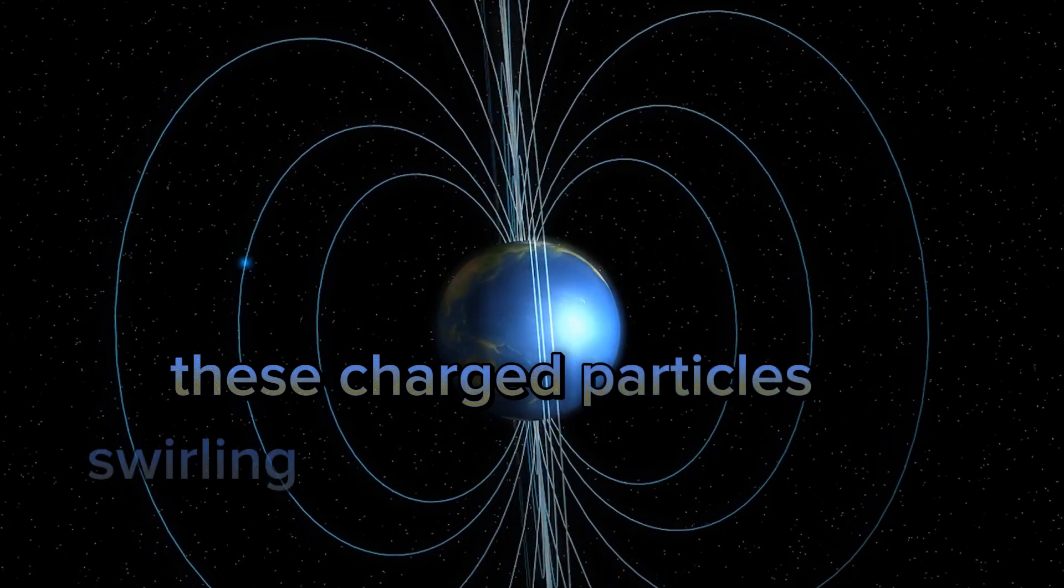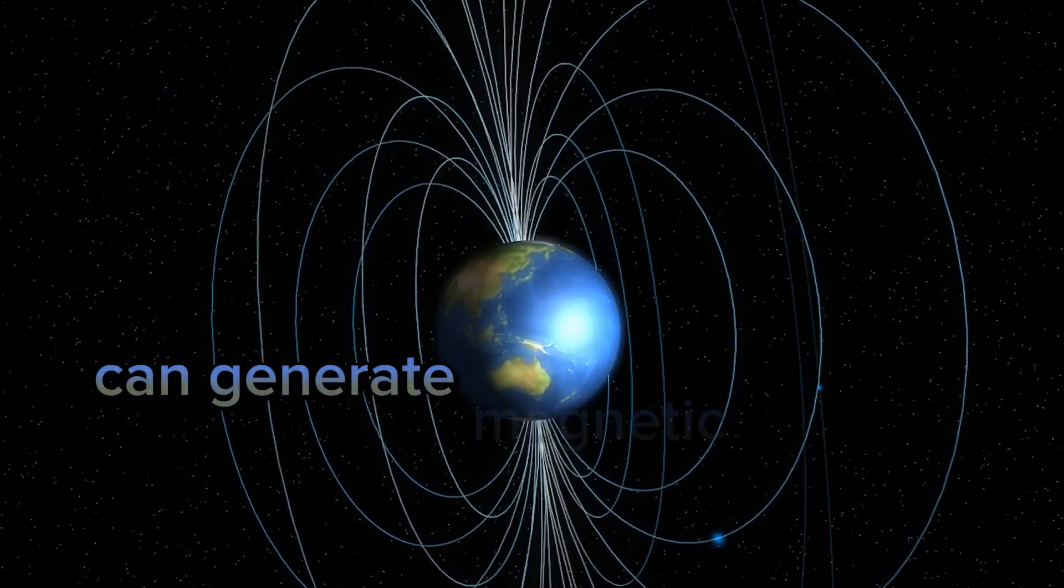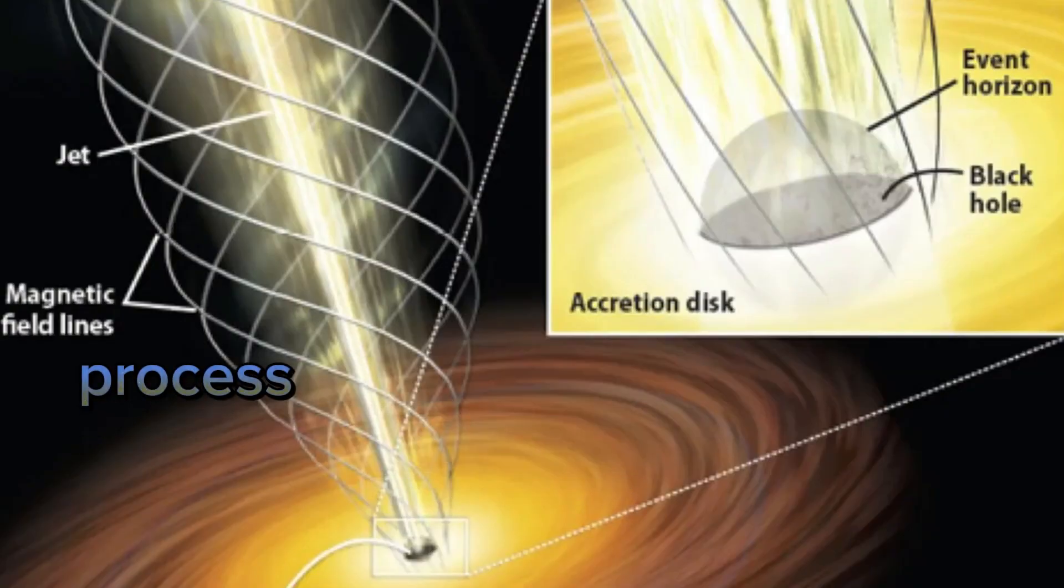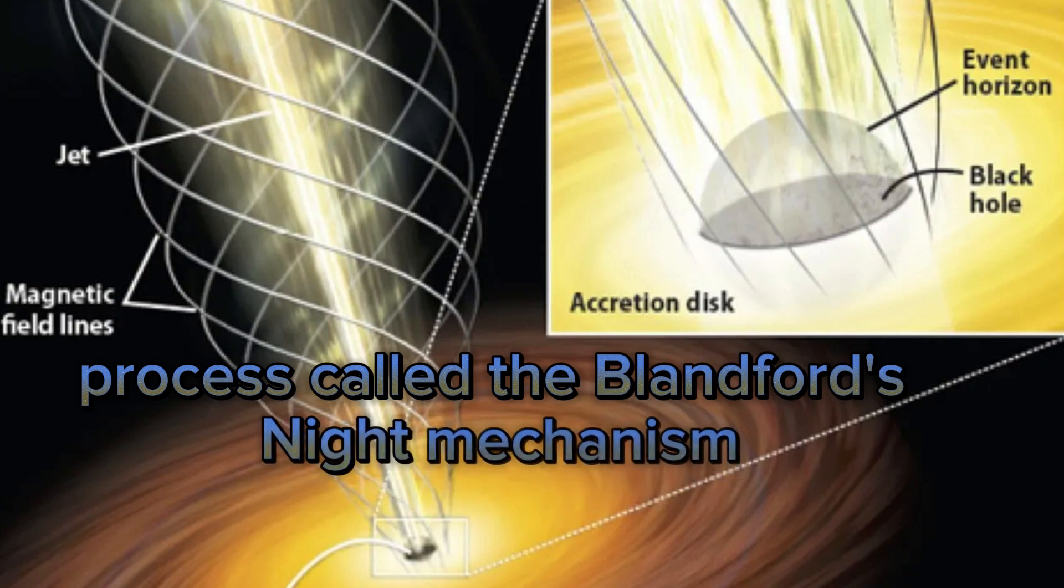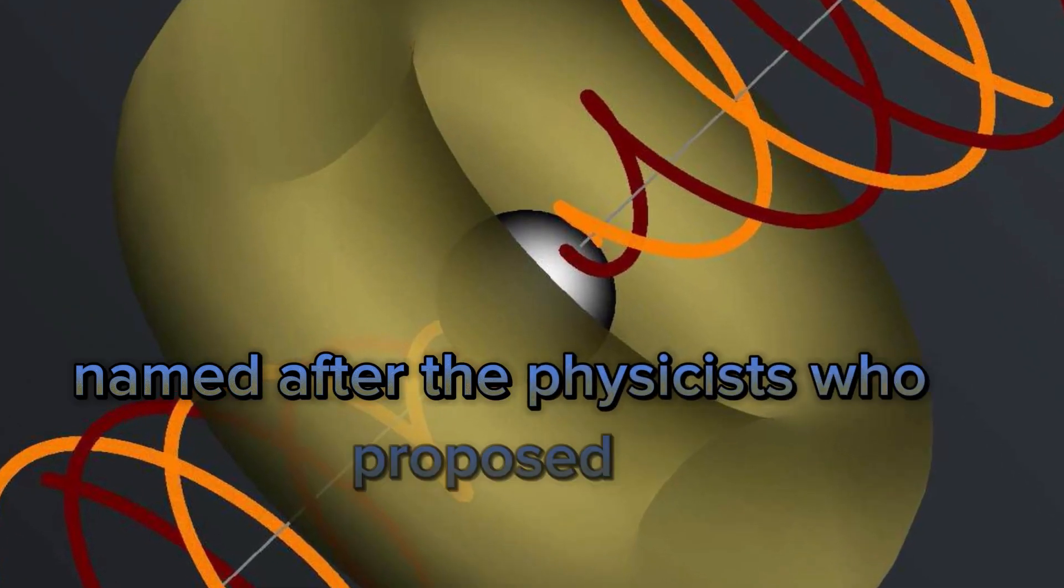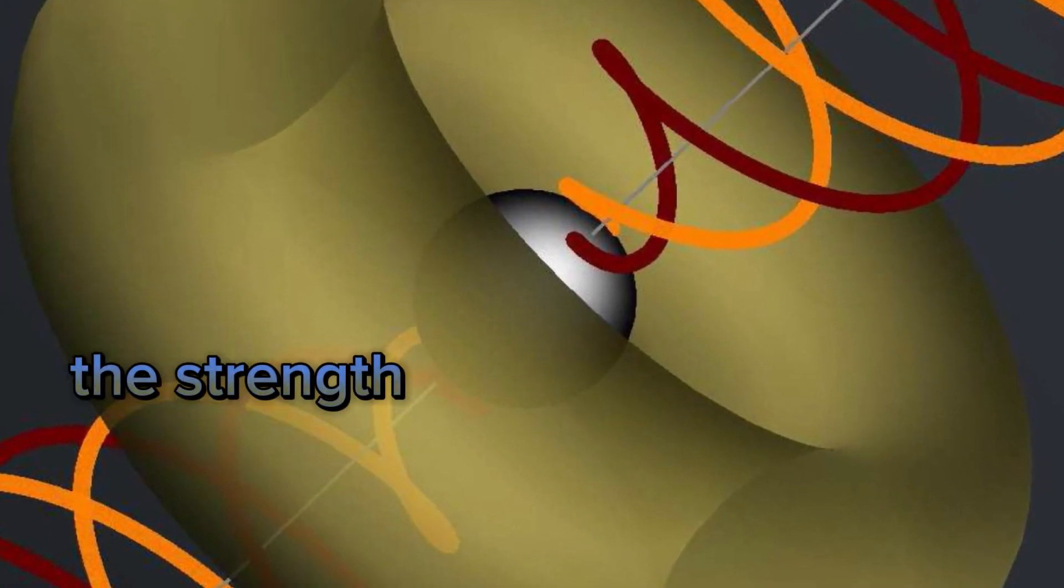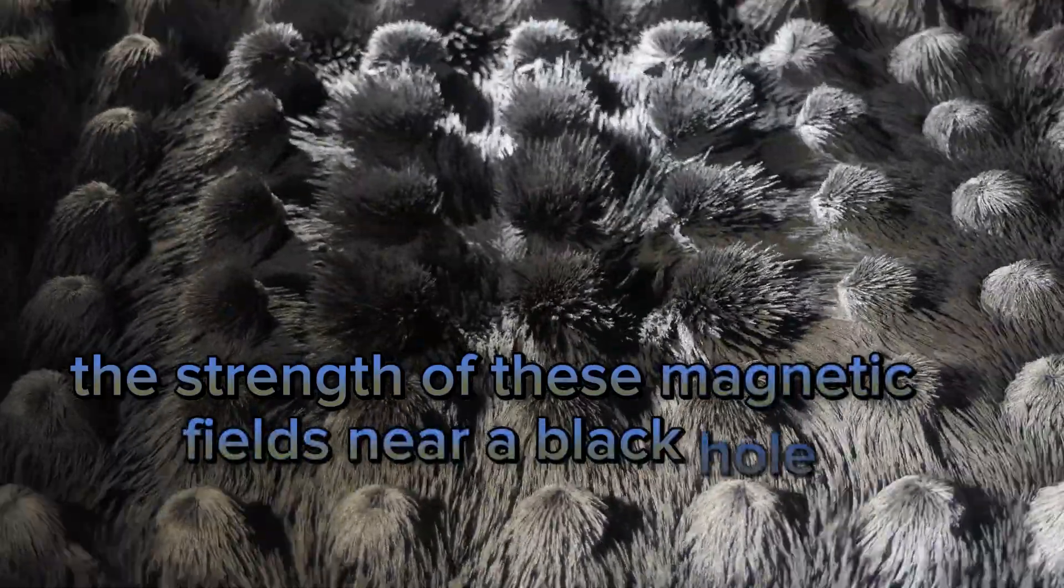These charged particles swirling around the black hole can generate magnetic fields through a process called the Blandford's Nyack Mechanism, named after the physicists who proposed it. The strength of these magnetic fields near a black hole can be astonishing.